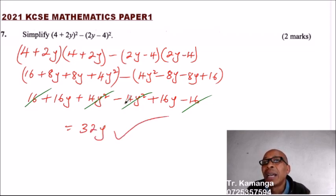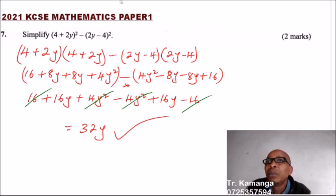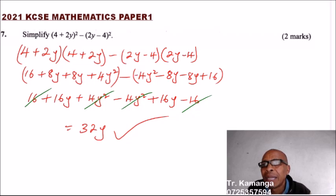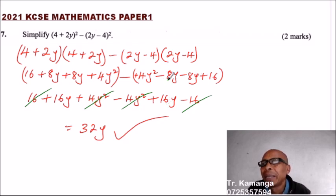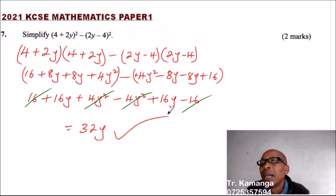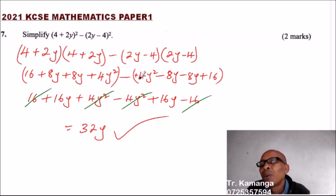So 16 minus 16 cancels out, and 4y squared minus 4y squared also cancels. You end up with 16y plus 16y, which gives 32y. That is the answer. The key step is that when you open the bracket the minus sign acts like minus 1, so minus 1 times positive 16 gives minus 16. By doing that correctly, you get 2 marks.